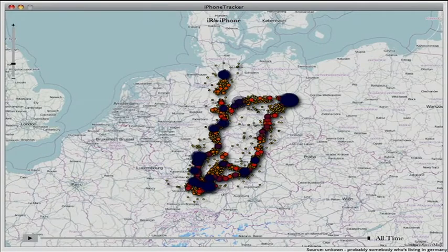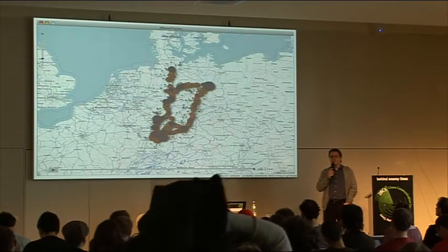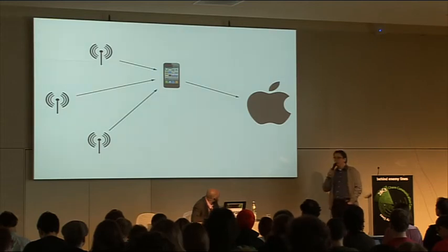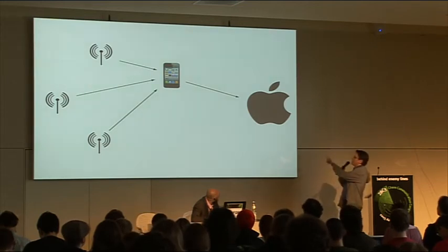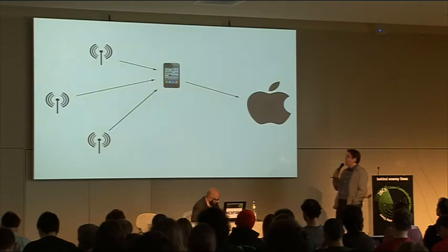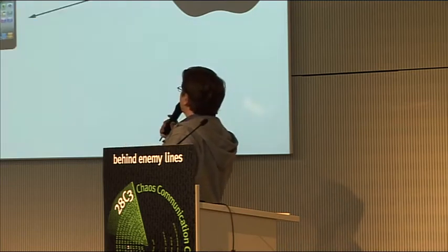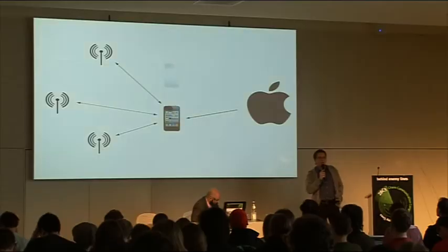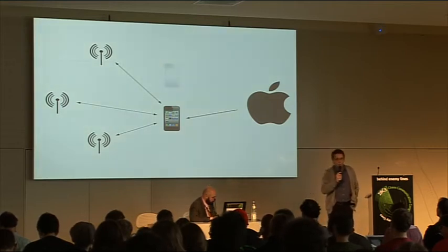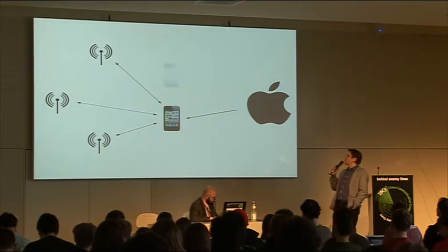You probably remember the iPhone tracker — you can install a small application that extracts the location data from your iPhone and presents it on a map, and you can see how you move through Germany. Basically, iPhones are scanning Wi-Fi stations nearby, measuring signal strength and sending it to Apple. Apple generates a map of Wi-Fi stations all over the world, then sends this data back to iPhones, which use the location of the Wi-Fi stations to triangulate their own position. It's basically like GPS — it's called WPS, Wi-Fi Positioning System — and it's cheaper, easier, faster than GPS and uses less battery.